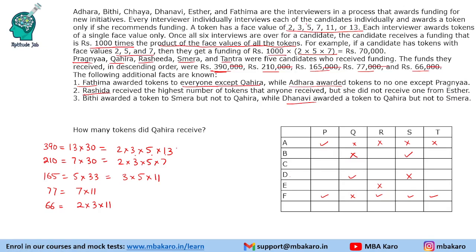Now using the hints: Fatima awarded tokens to everyone except Kweera — meaning 4 candidates. The only prime appearing in four of the five factorizations is 3, so Fatima's token value is 3. For Adhara, who awarded to only one candidate, the prime appearing in only one factorization is 13. So Adhara's token value is 13.